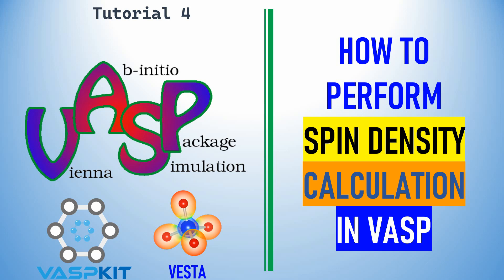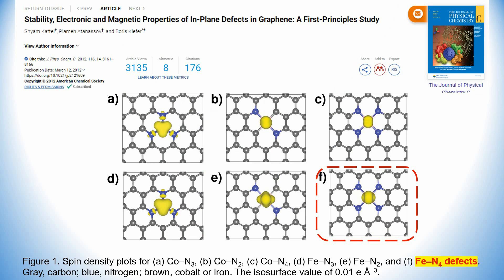Dear friends, this is my tutorial for VASP. In this video I'm going to explain how to perform spin density calculation in VASP. This paper shows the spin density of different kinds of N-coordinated cobalt, Fe-N coordinated graphene with different coordination types. The marked one is the Fe-N4 defect, and I'm going to show you how to get this kind of spin density.